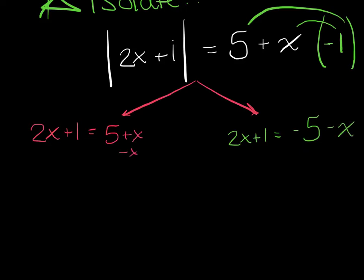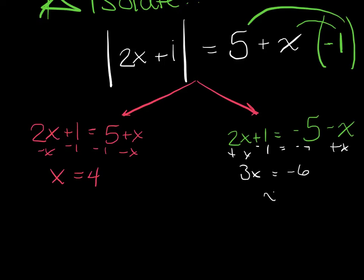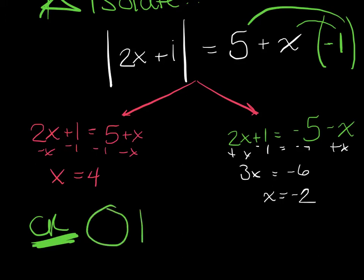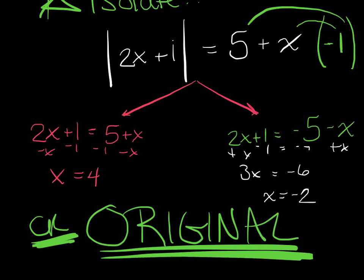I'm going to subtract x, subtract x, subtract 1, subtract 1 — I get x equals 4. On the other side, I'm going to add x, add x. So I've got 3x, subtract 1, equals negative 6, and x equals negative 2. Now remember, you're not done — you have to check. All of these equations get checked. And ask yourself: where do you always check? We always check in the original.